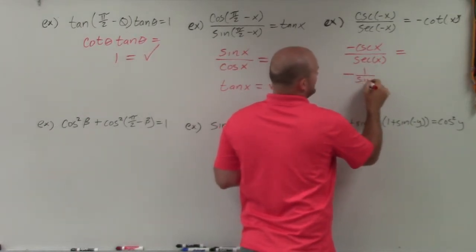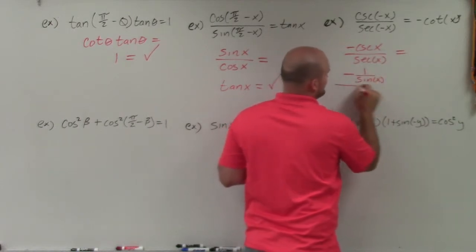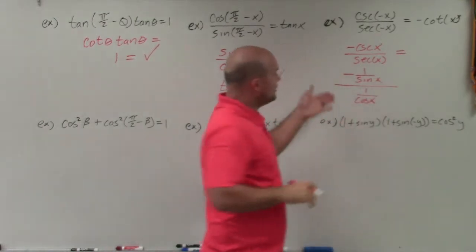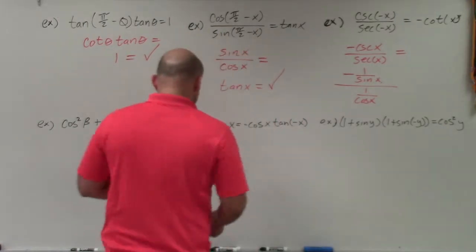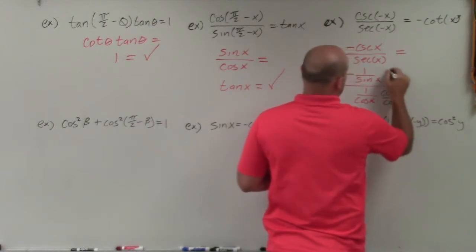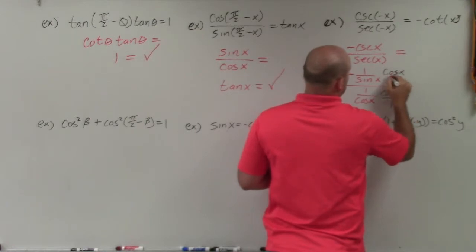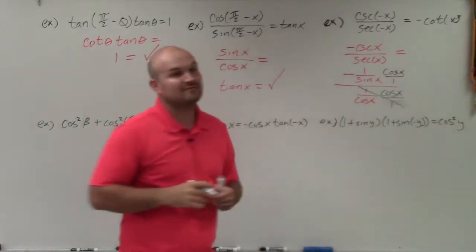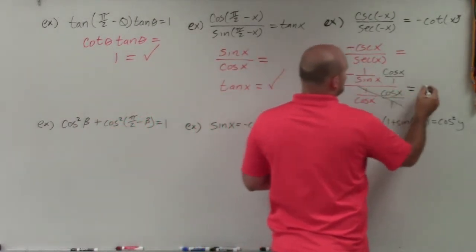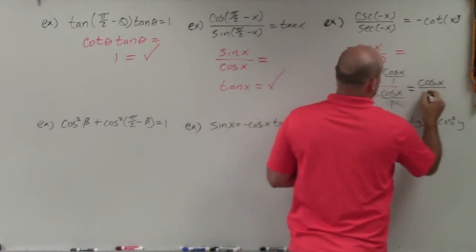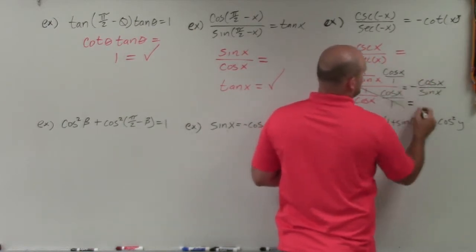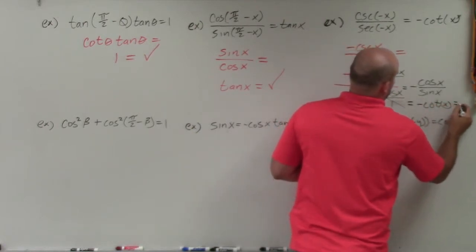I can rewrite the expression as negative 1 over sine of x — which is cosecant of x — divided by 1 over cosine of x. Now I have a fraction divided by a fraction, so I multiply by the reciprocal: cosine of x over 1. The cosine terms cancel to 1, and I'm left with cosine of x over negative sine of x, which equals negative cotangent of x — and that's now verified.